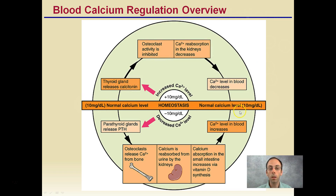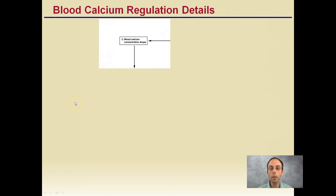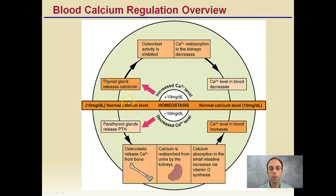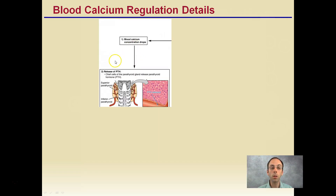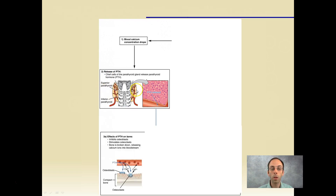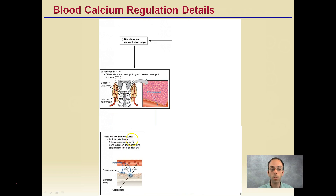Putting it all together, we're trying to maintain homeostasis — if calcium levels increase, we want to lower them, and if they decrease, we want to raise them. Looking in more detail: when blood calcium concentration drops, the body releases PTH, the parathyroid gland hormone, into the bloodstream. That causes an effect on bone — it inhibits the osteoblasts, stimulates the osteoclasts, bone is broken down, and calcium ions are released into the bloodstream.